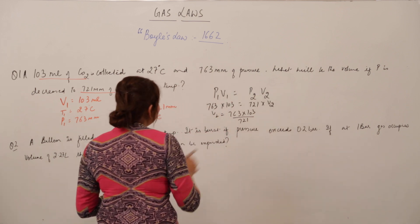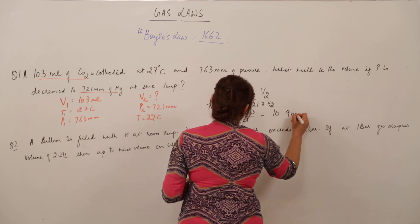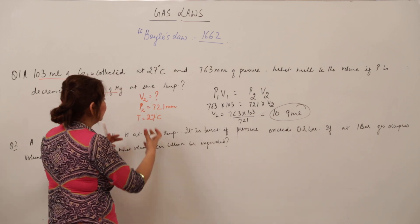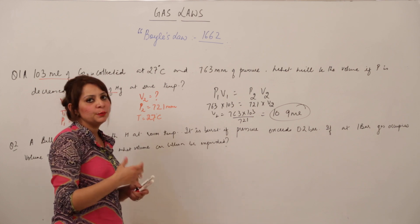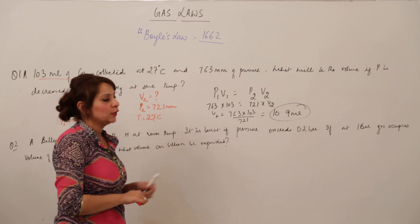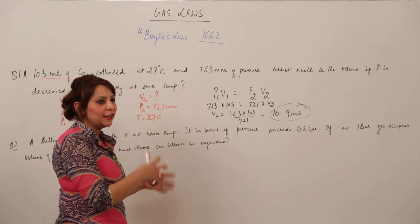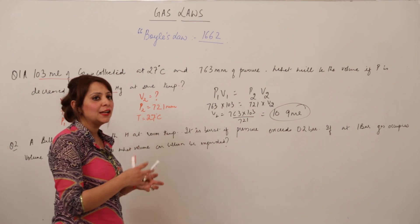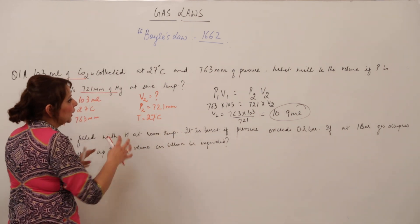We need to find V2, so V2 = (763 × 103) / 721, which comes out to be 109 ml. That is the new volume when the pressure is reduced. Similarly, if you increase the volume you can find the pressure. Using P1V1 = P2V2 is simple — you just need to remember this relation for a gas at constant temperature and fixed amount.